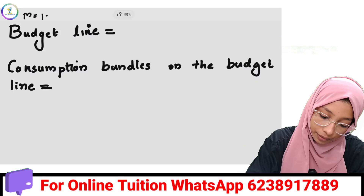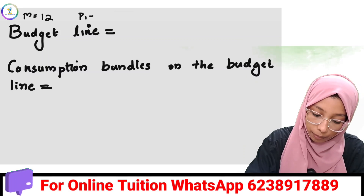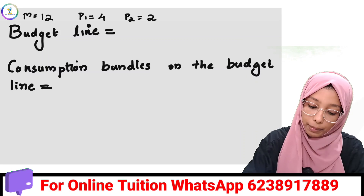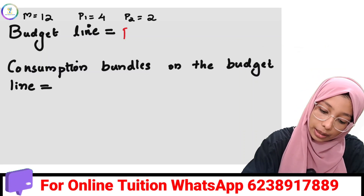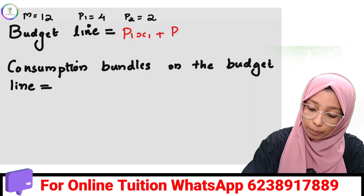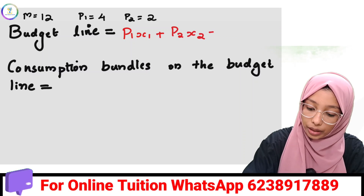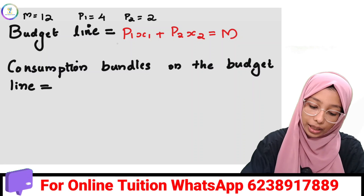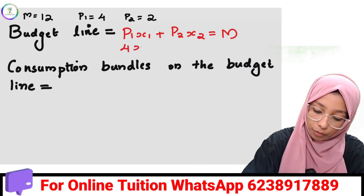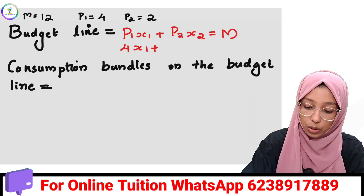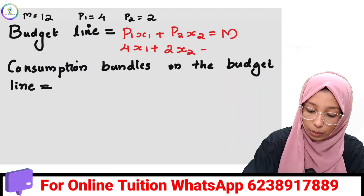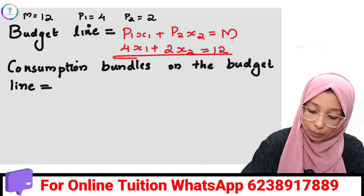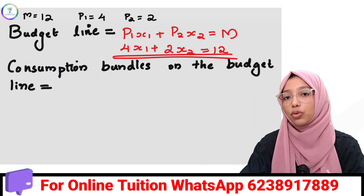Now we have an example: M equals 12, P1 equals 4, P2 equals 2. So our budget line equation is 4x1 plus 2x2 equal to 12.